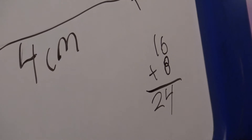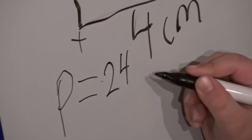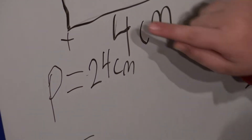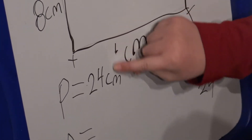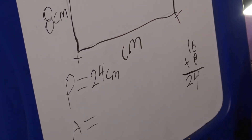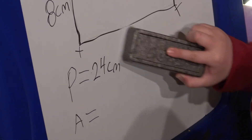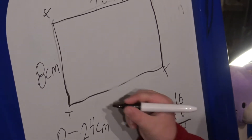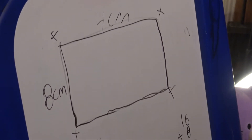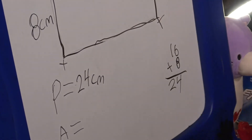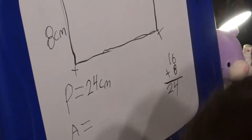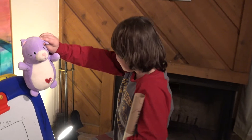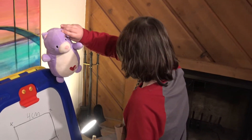So perimeter equals 24 centimeters. And then for area, all you need to do for area is 8 times 4. It turns out that area is the space inside the circle — or whatever shape you got.